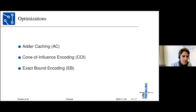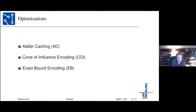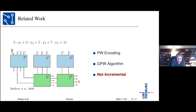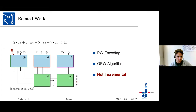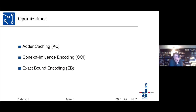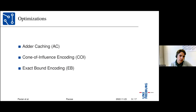What makes it dynamic is that rather than checking one fixed bound, by playing around with the T variables you can search for many different values at the same time. This enables incremental MaxSat solving using only solving with assumptions. Three optimizations are then introduced: adder caching, cone of influence encoding, and exact bound encoding.